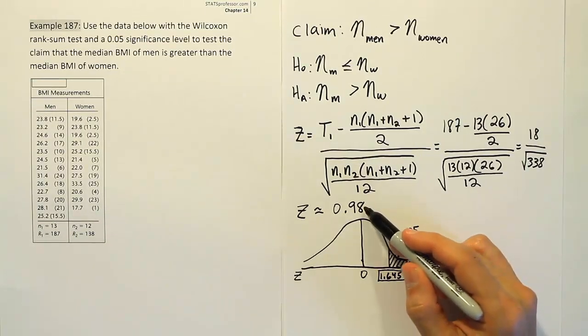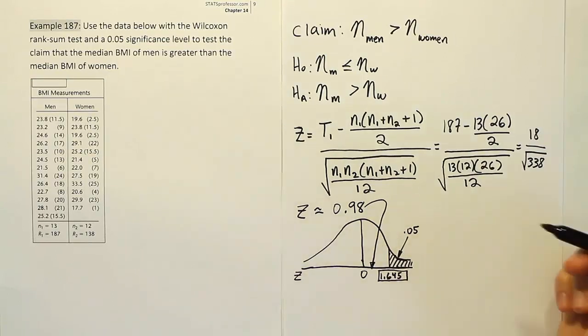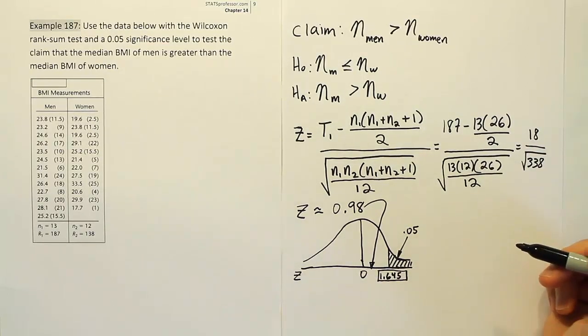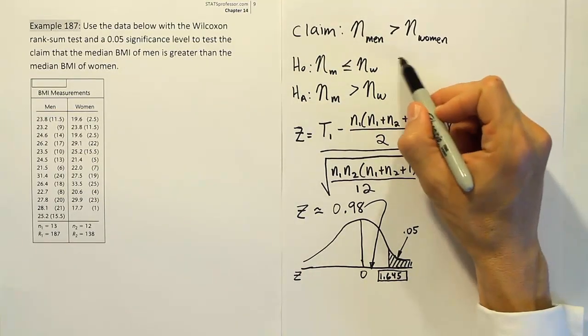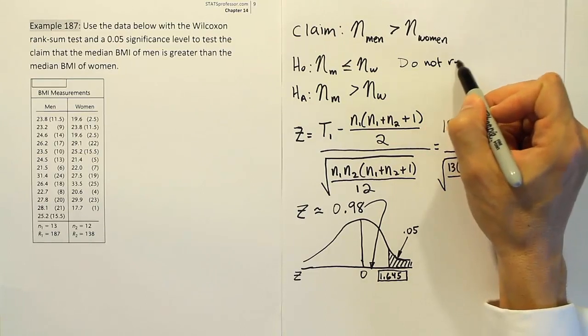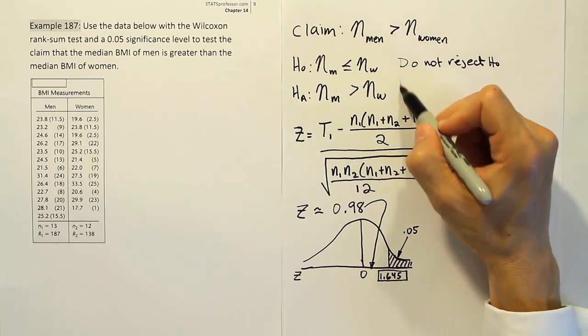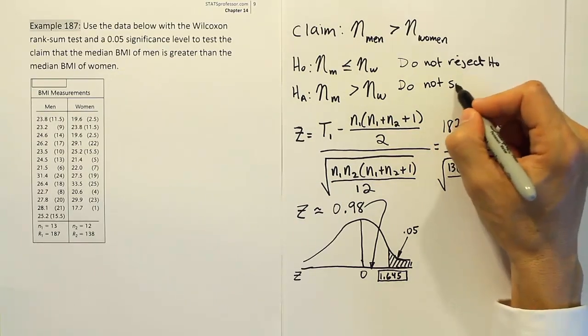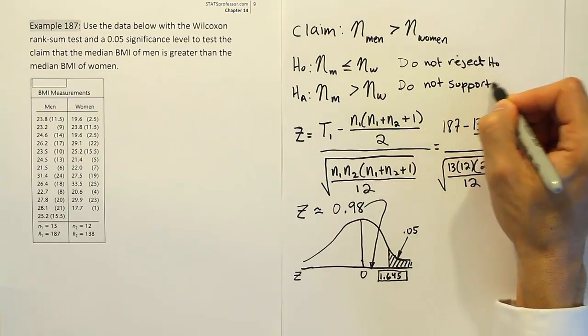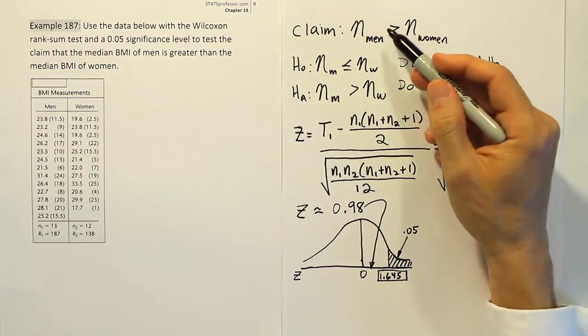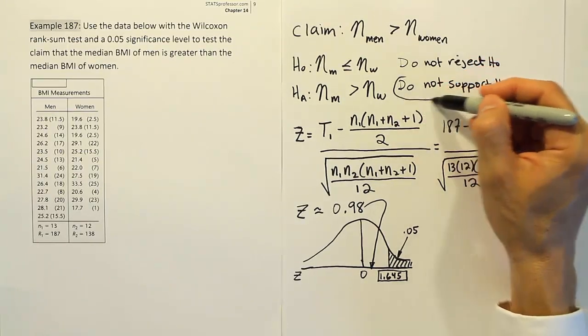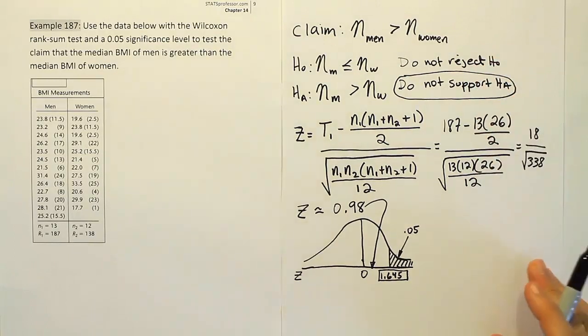So we look up 0.05, we got 1.645 as our critical value. And clearly you can see that this test stat lands over here. It lands in the white space. So we're going to say that we do not reject H0. So we're going to conclude here that we do not reject H0 and therefore do not support HA. Now remember, when you look at our claim here, you can see our claim is actually the same as HA. So we're going to say we cannot support the claim. In other words, we cannot say that men have a higher BMI than women.